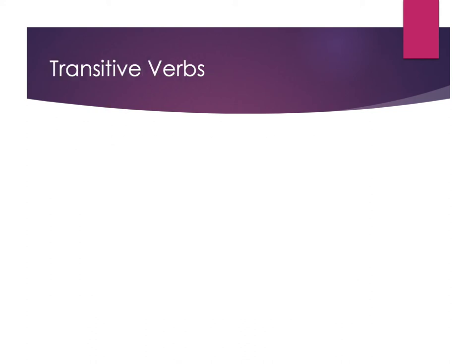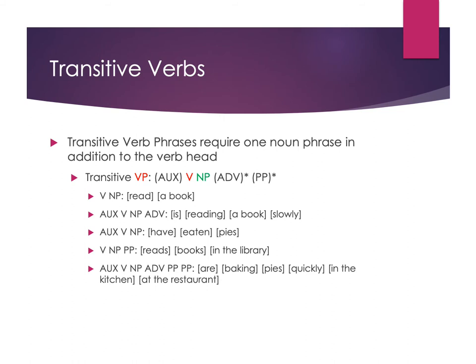For transitive verbs, the same optional elements are there, but a transitive verb also requires a noun phrase as an object. So 'I read a book' has a noun phrase as well as a verb phrase. All the optional pieces can also be there — so 'we are baking pies quickly in the kitchen at the restaurant' has the auxiliary 'are,' the verb 'baking,' the required noun object, and additional optional elements.